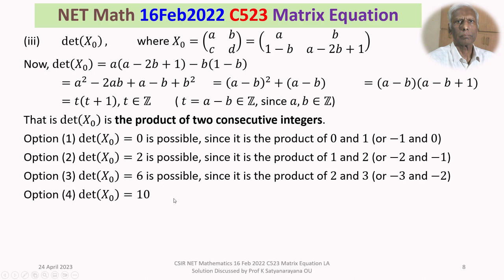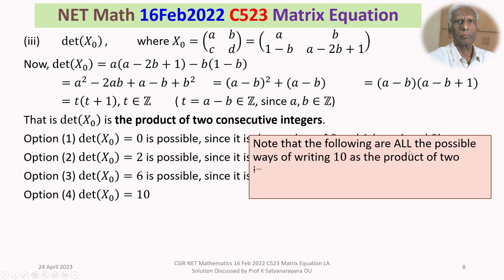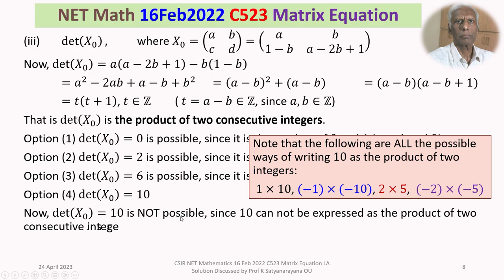Det(X₀) = 10 is not a possible value. To see why, we list all ways to write 10 as a product of two integers: 1×10, (−1)×(−10), 2×5, (−2)×(−5). None of these pairs are consecutive integers. Therefore, 10 cannot be expressed as t(t+1) for any integer t, so det(X₀) = 10 is not possible. The answer is Option D.